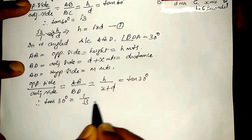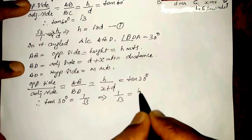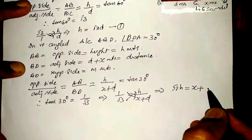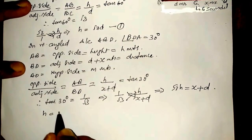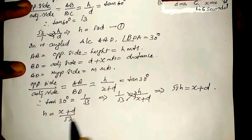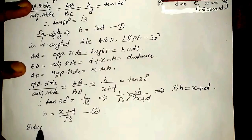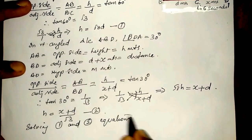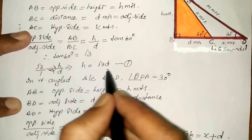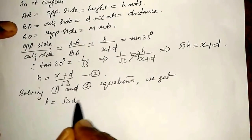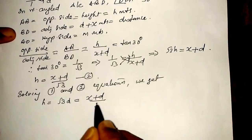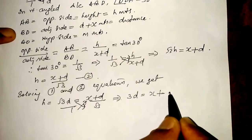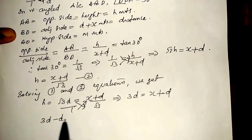Opposite side divided by adjacent side equals AB divided by BD, which is H divided by (X plus D), equal to tan 30 degrees. Therefore tan 30 degrees equals 1 by root 3, so 1 by root 3 equals H by (X plus D). Cross multiplying gives root 3 H equals X plus D, therefore H equals (X plus D) by root 3. This is the second equation.